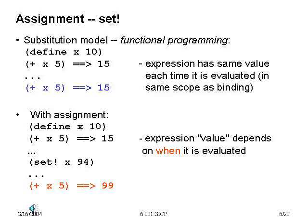Once we've introduced mutation or assignment into our language, this no longer holds. An expression's value now depends on when we evaluate it. We've introduced time into our system in a very fundamental way. For example, if x starts as 10 and we evaluate `(+ x 5)` we get 15. But after evaluating `(set! x 94)`, the same expression `(+ x 5)` now gives 99. Two syntactically identical expressions now give different values because their semantics depends on context — what other expressions have been evaluated before them.